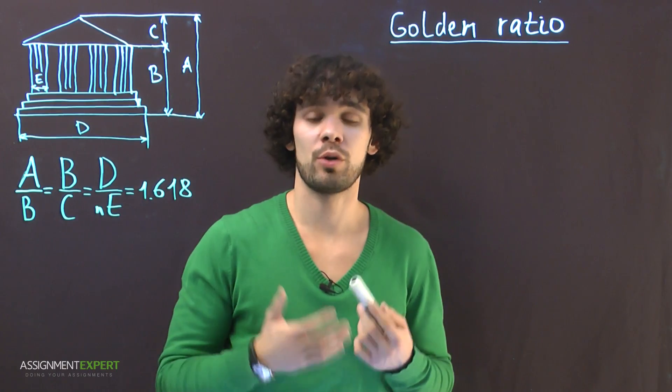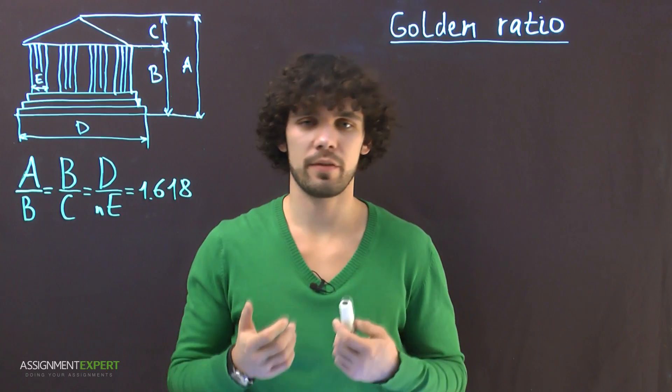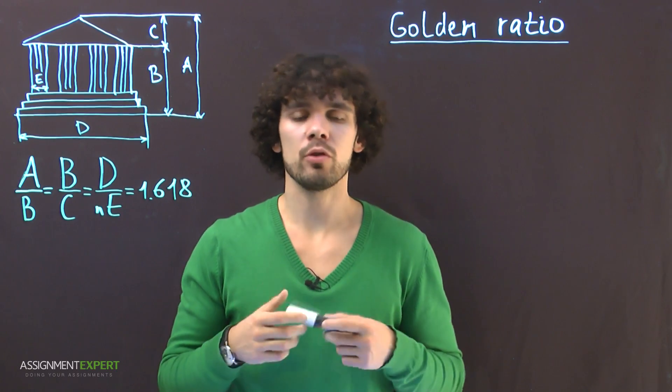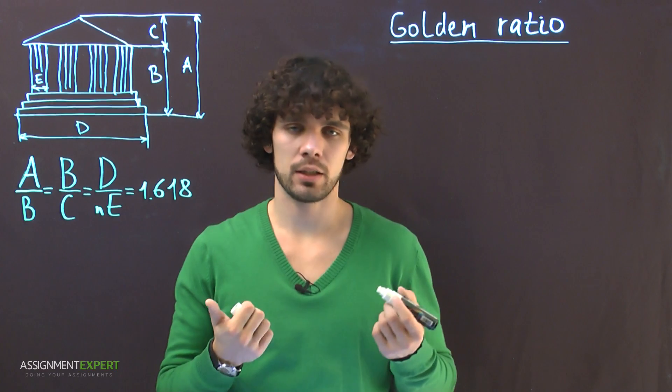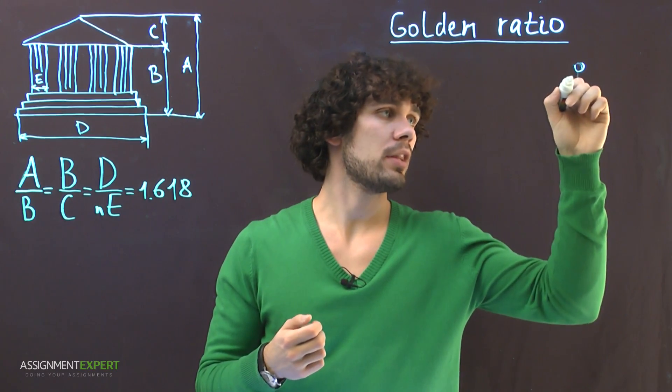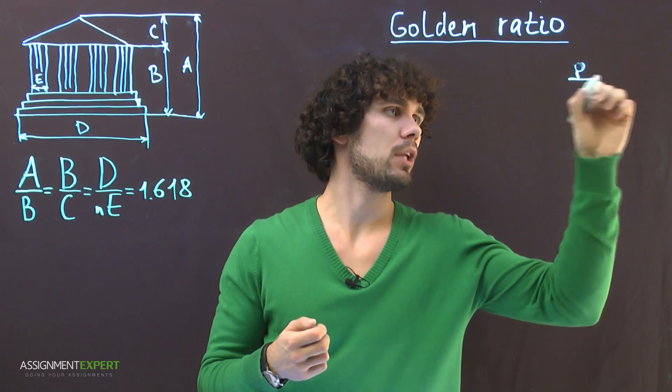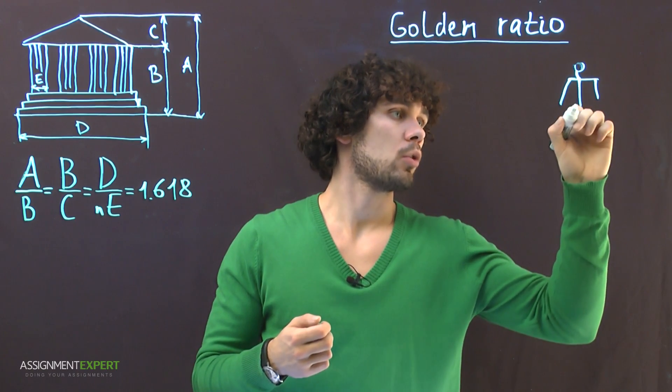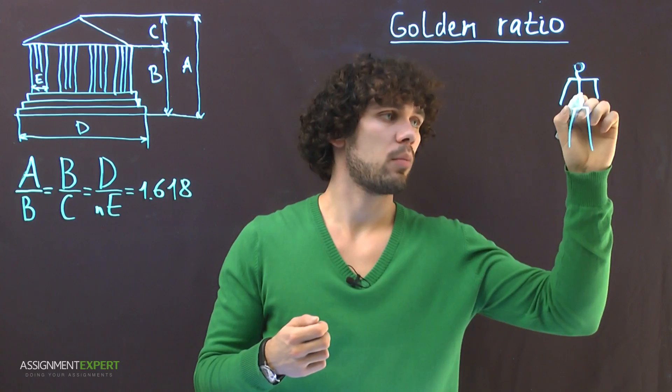The golden ratio refers not only to fruits of human activity, but to humans themselves. German researcher Zeising measured more than 2,000 human bodies and concluded that it's a manifestation of a medium statistic law, which is the division of a body at the point of the navel.